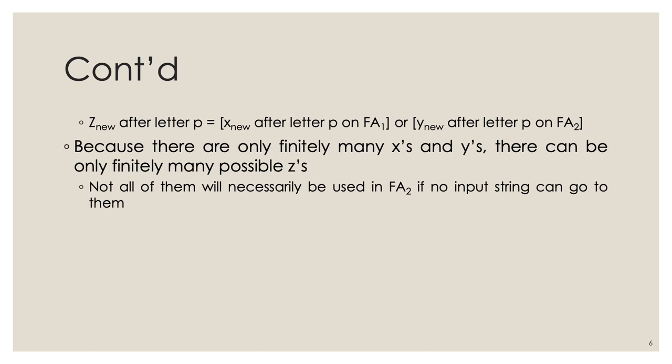Because there are finitely many X states and Y states, there can be only finitely many possible Z states — not all of them will necessarily be used. The upper bound on the number of Z states equals the number of states in FA1 multiplied by the number of states in FA2. So the maximum number of Z states is that product.